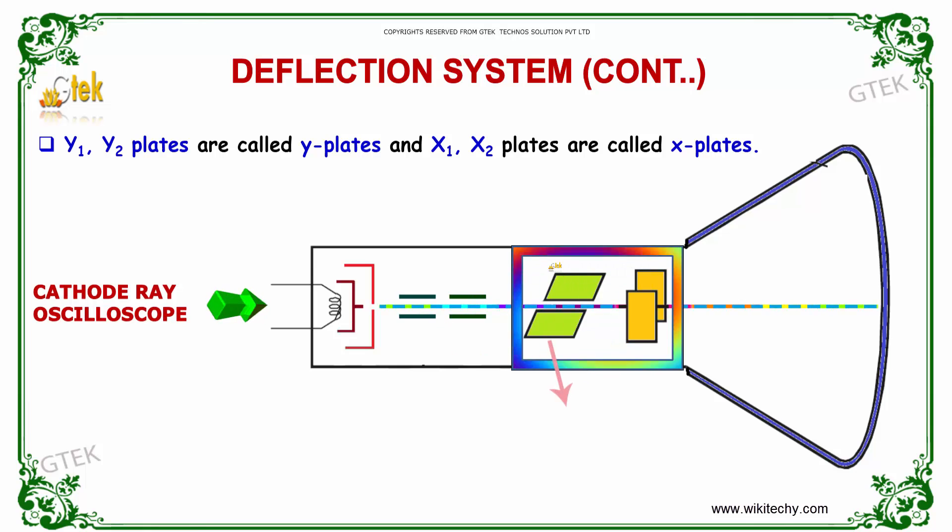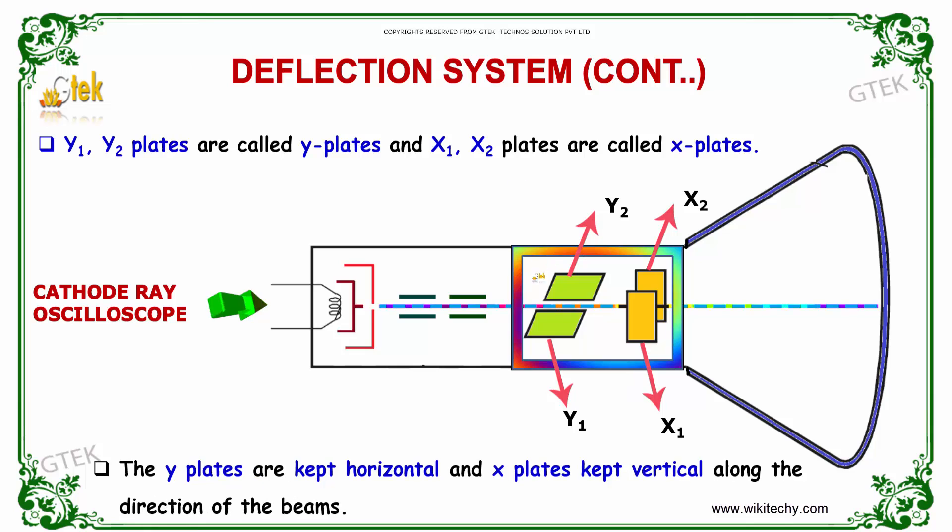Considering the plates Y1, Y2 which is called as Y plates. Similarly, X1, X2 plates are called as X plates. So the Y plates are kept horizontal and the X plates are kept vertical along the direction of the beam. You can see here the direction of the beam which is passing through the Y plate and X plate.